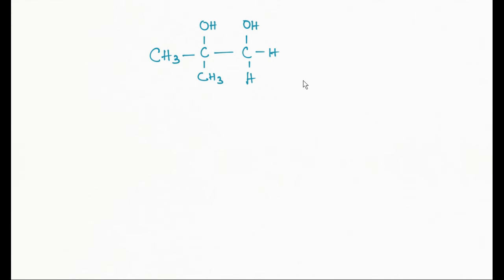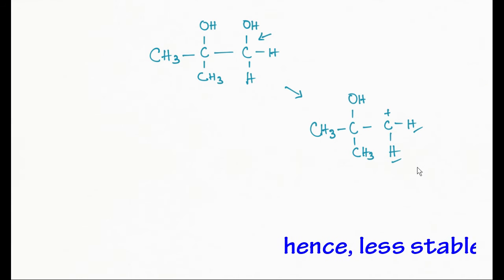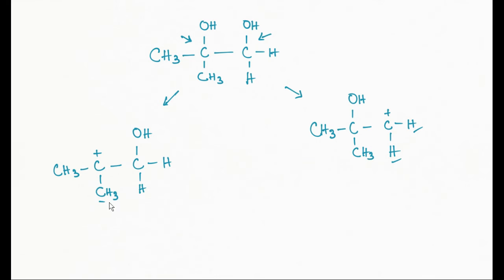For example, this is an unsymmetrical diol. If this side loses the hydroxyl group, the resulting carbocation is stabilized by two hydrogen atoms. But if this side loses the hydroxyl group after protonation, the resulting carbocation is stabilized by two methyl groups, hence more stable. In the next step, hydrogen migrates and finally deprotonation gives us the final product.